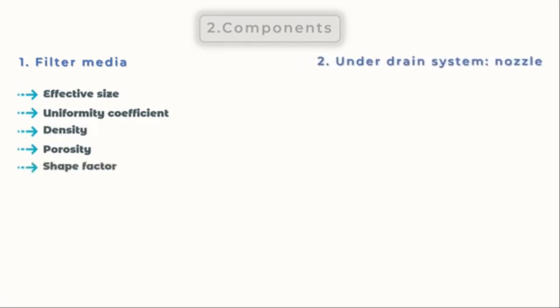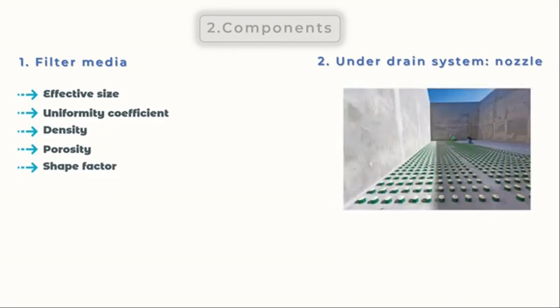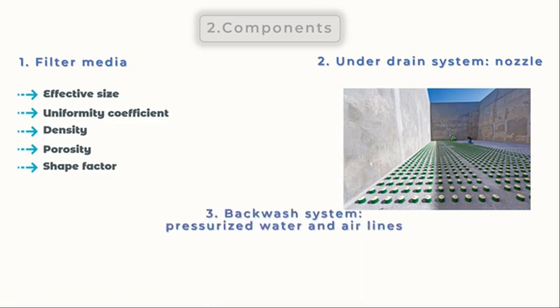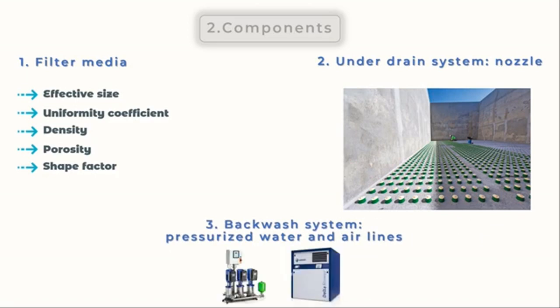The filter underdrain system is the second element. It is used to distribute the backwash water and collect the filtered water. For water treatment, we typically employ a false floor underdrain with nozzles. Depending on whether they are designed for water-only backwash or for combined air scour and water backwash, these nozzles can be one of two varieties. Filter nozzle slot sizes range from around 0.2 millimeters to about 10 millimeters. A density of roughly 50 nozzles per square meter of floor is required to prevent the formation of preferential routes in the filtering mass, often known as mud balls. Other equipment such as the water booster pump and the air booster are also required to clean the filters.